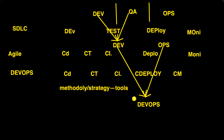Whoever comes from any area — whether you're a DBA, working in middleware, monitoring, QA, developer, or even a business analyst — if you know this process of automation and the DevOps strategies and tools, you can become a DevOps person. You don't need to have coding skills.